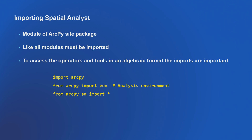What does the next line do? It's setting the environment — ENV is going to be an object which will have methods and properties. The properties are cell size and different analysis parameters. Key is line three: obviously we're importing Spatial Analyst, hence .sa. We're importing it with the star, which allows us to use algebraic format with our syntax.